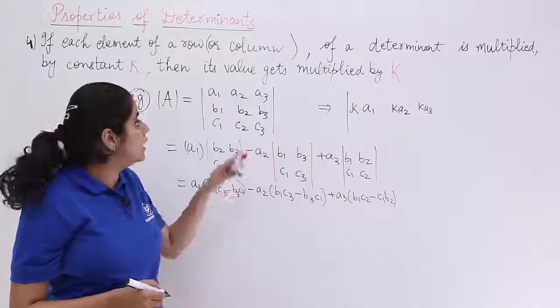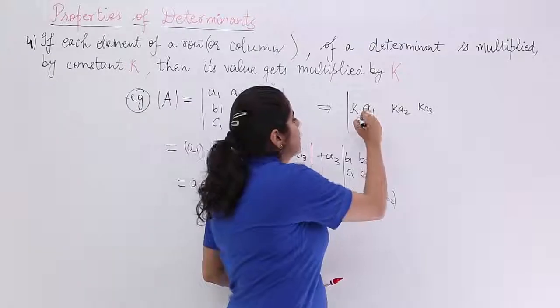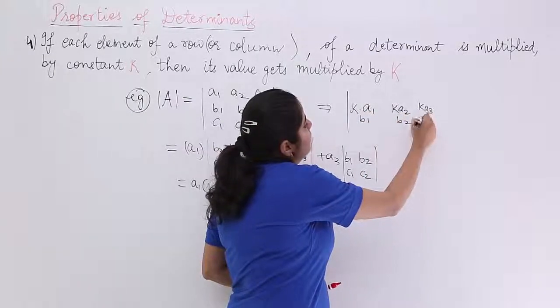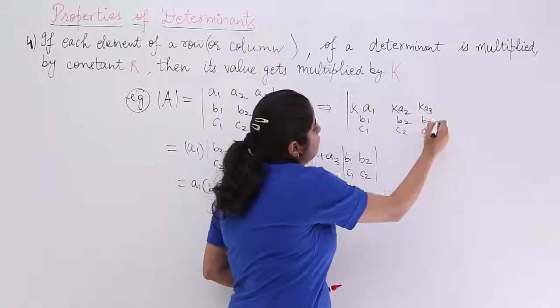Let's say that I have a changed determinant. I multiply each element of the first row by K. K, so it is Ka1, Ka2, Ka3, B1, B2, B3, C1, C2, C3.